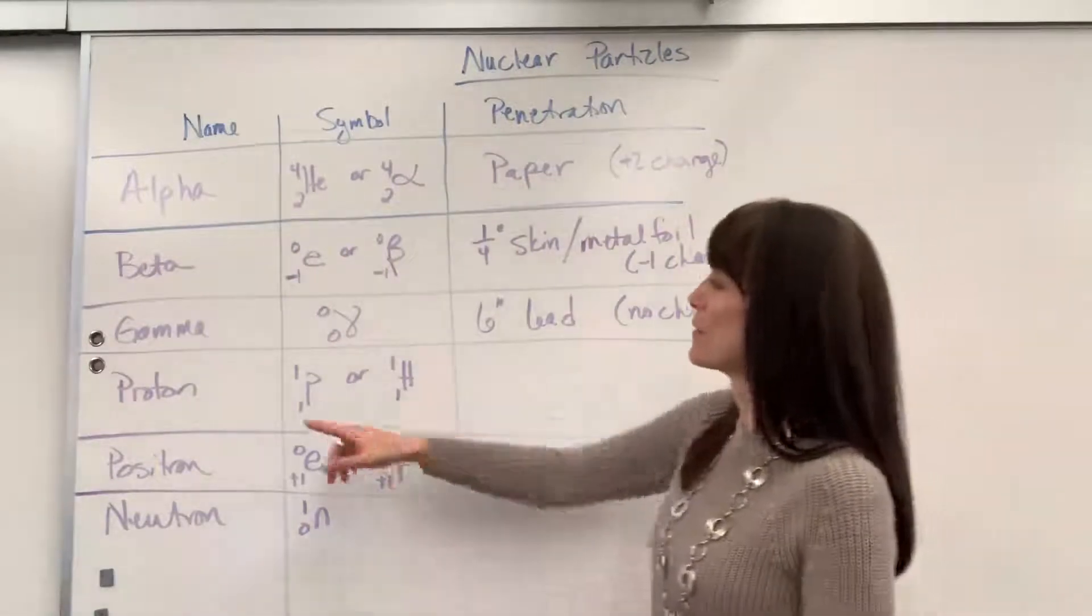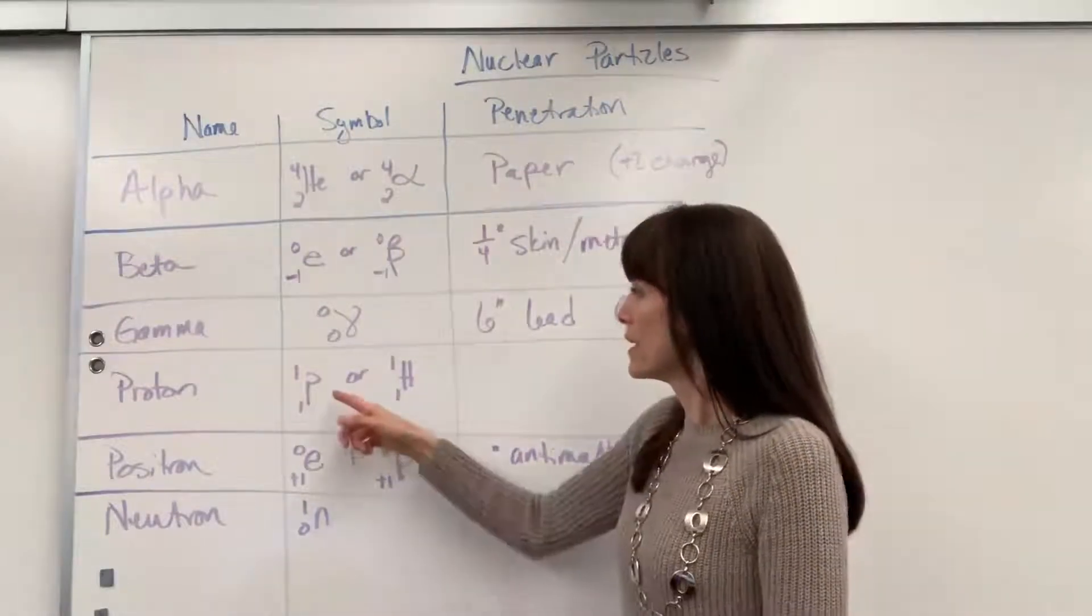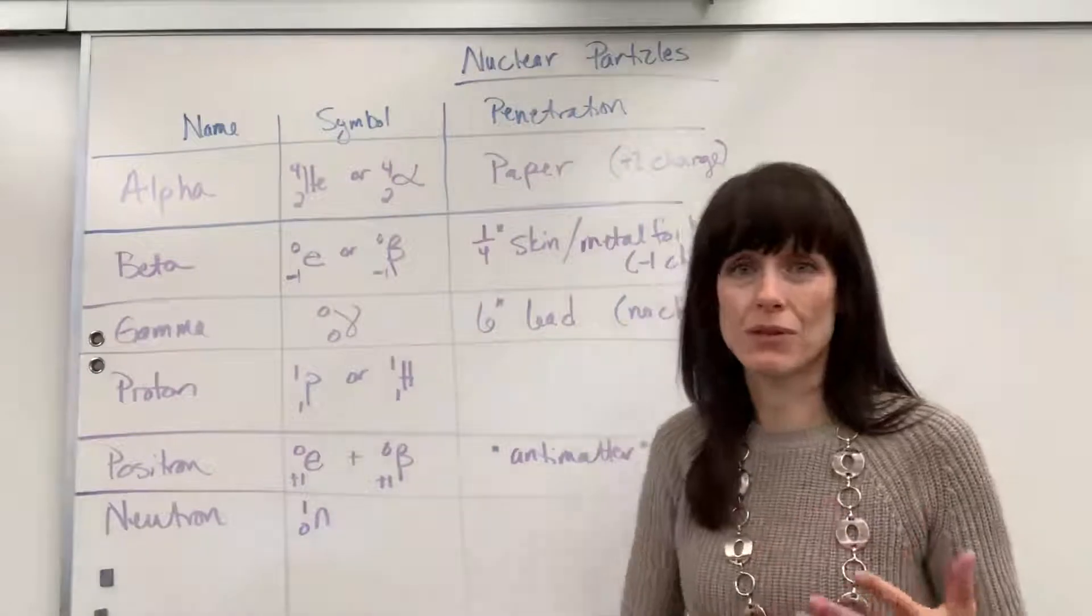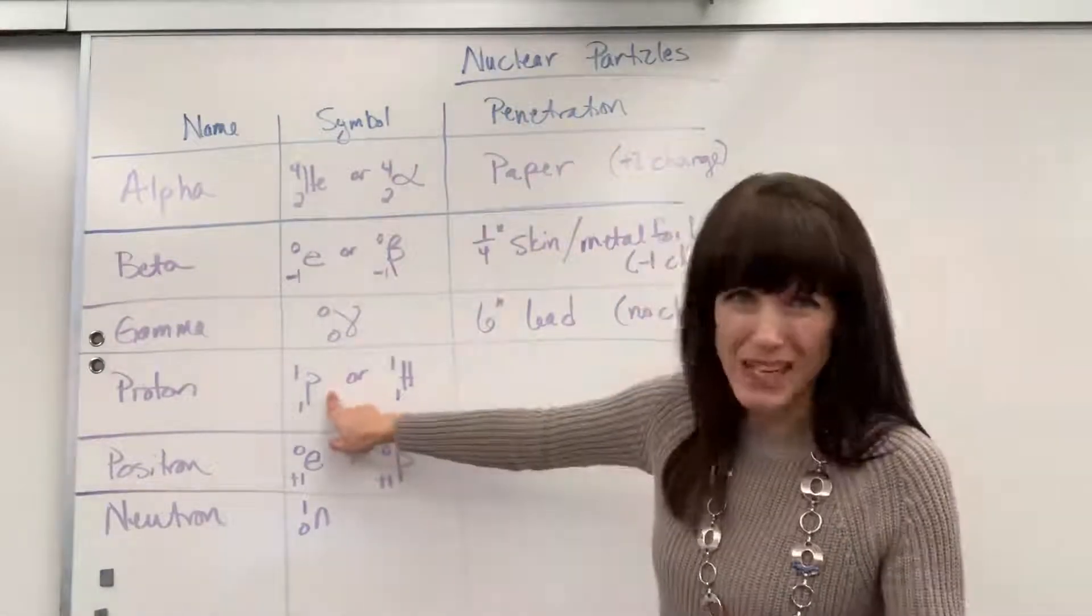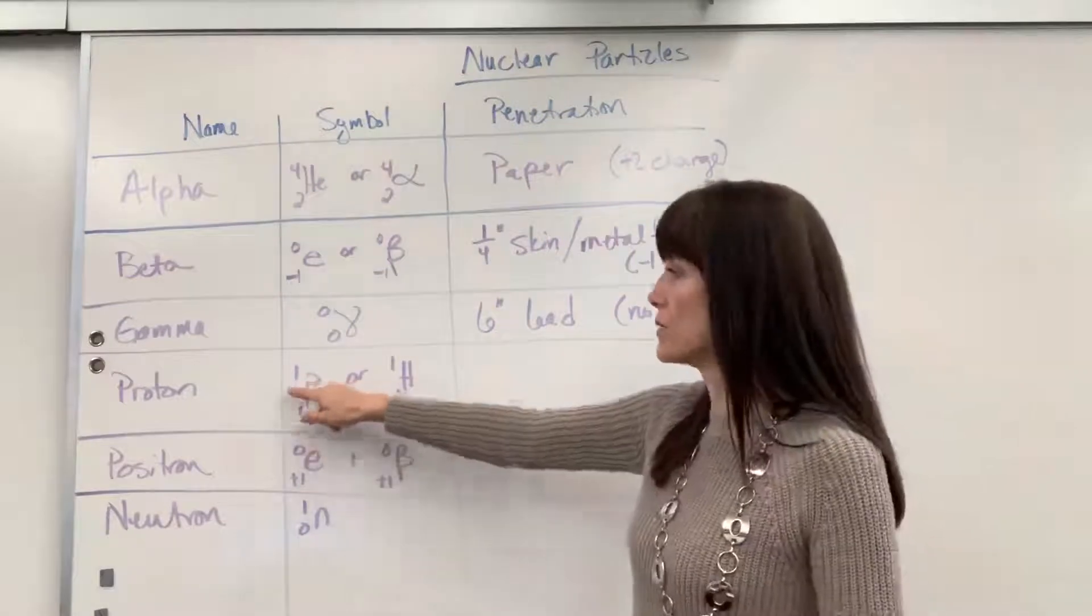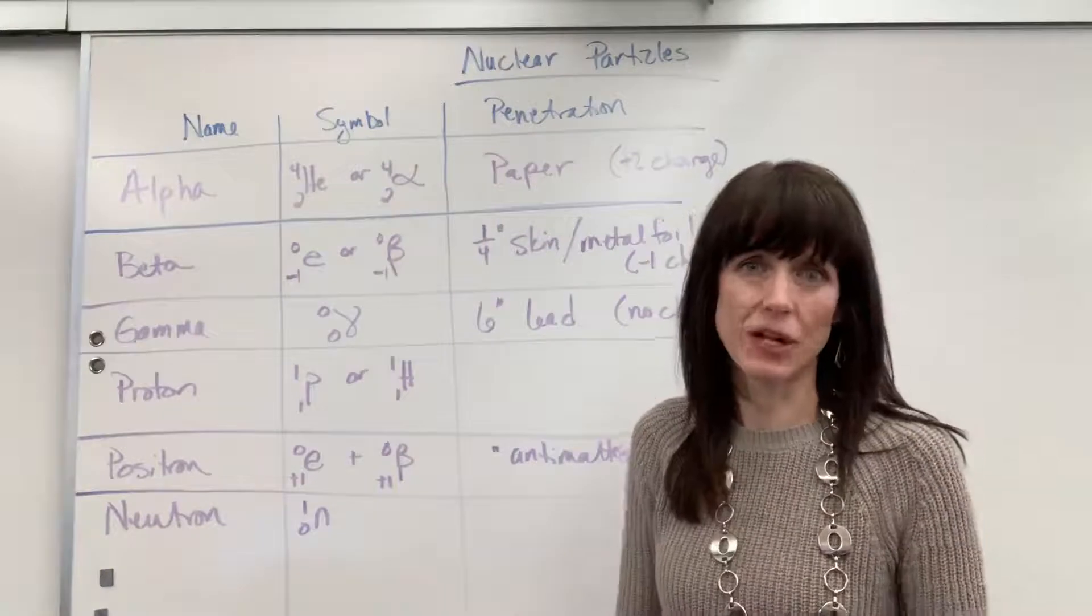Next particle is going to be a proton and it is exactly what you're thinking. It is just a hydrogen atom with no electron. So two ways that we could represent this. P for proton and you could do the one for the atomic number and of course it would have a mass of one or a hydrogen and that's really what a proton is when it doesn't have an electron.